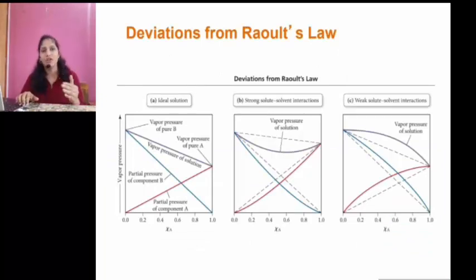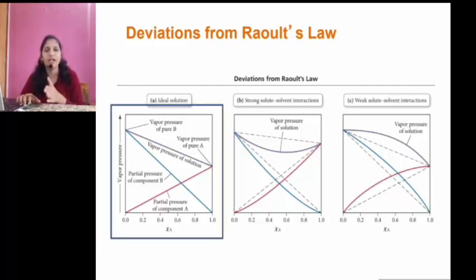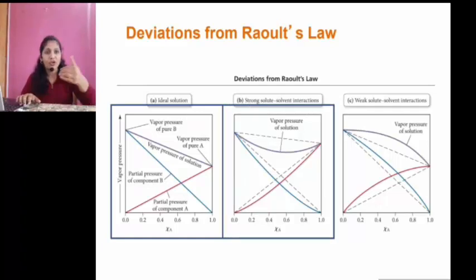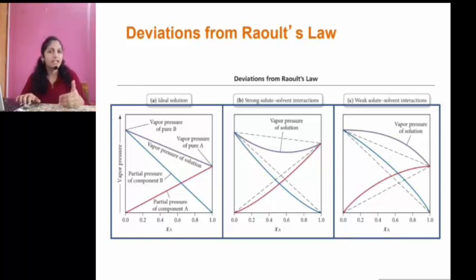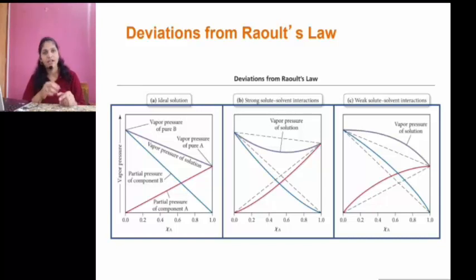Now let's see the summary of Raoult's Law and its deviations. The first diagram shows the standard relation of vapor pressure and mole fraction for an ideal solution. The second shows graphical representation of a non-ideal case with negative deviation, and the third shows a non-ideal case with positive deviation, meaning less interaction between solute and solvent. I hope all of you understand the concept of solutions — how solutions are prepared, what Raoult's Law is, and the deviation of Raoult's Law from ideal behavior. Thank you.